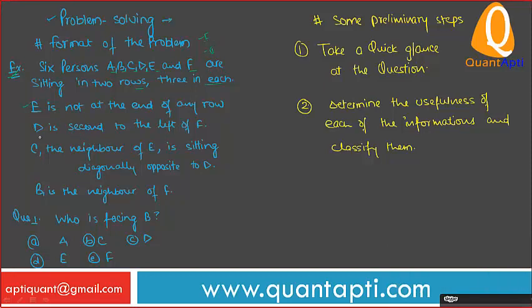Some hints are given: E is not at the end of any row. D is second to the left of F. C, the neighbor of E, is sitting diagonally opposite to D. B is the neighbor of F, and so on.